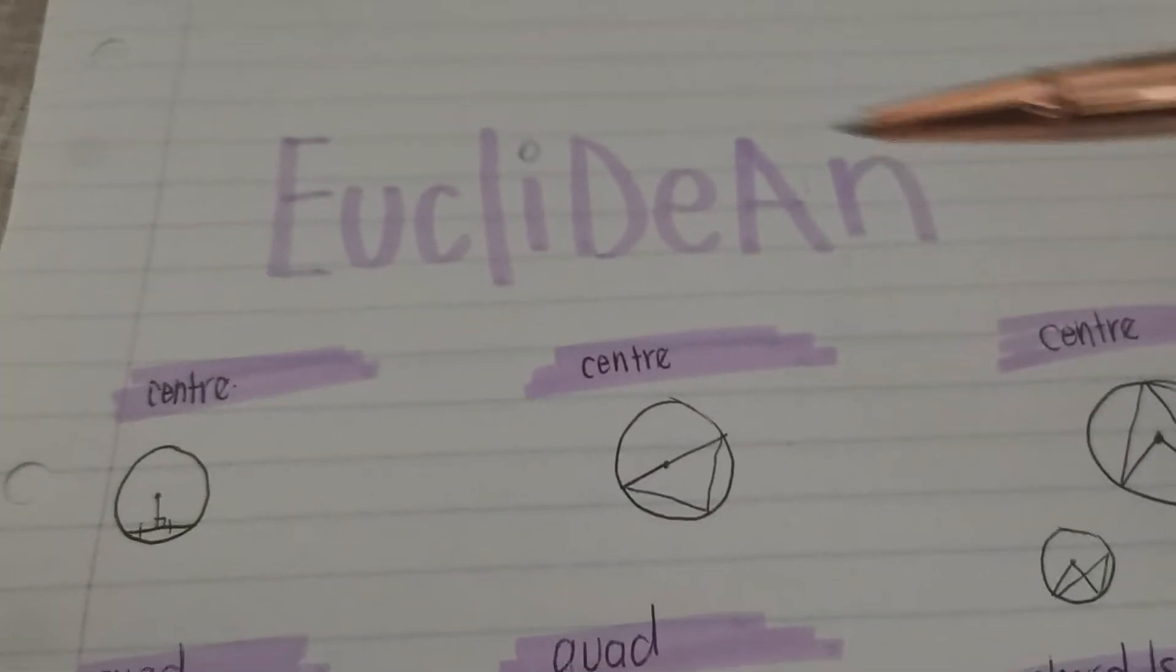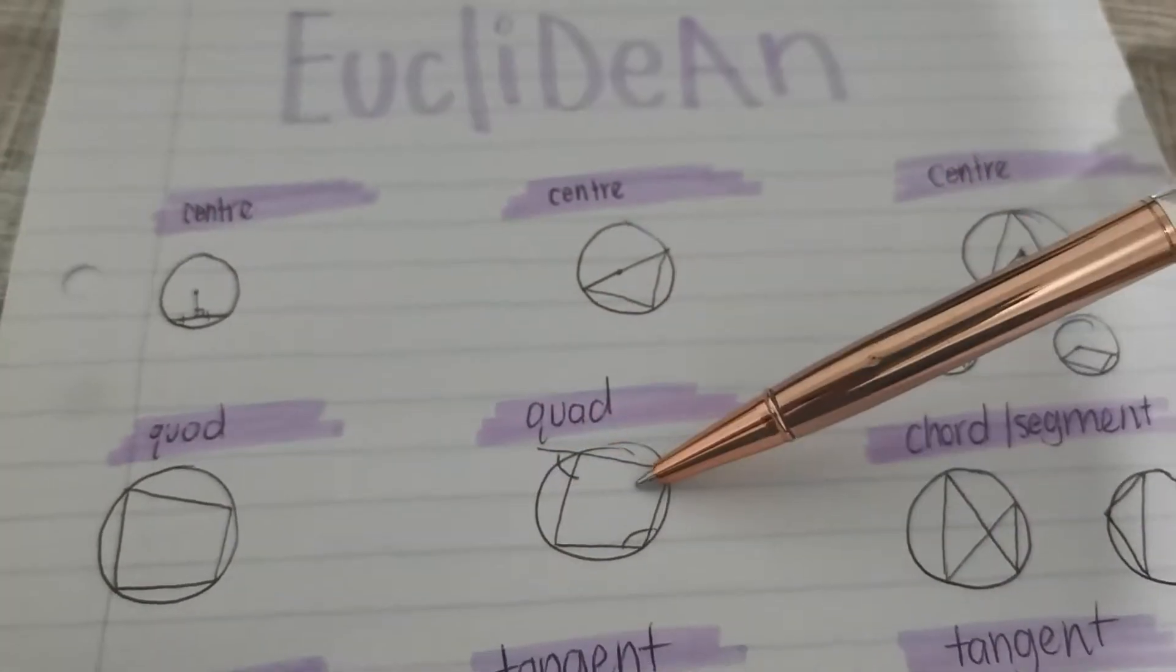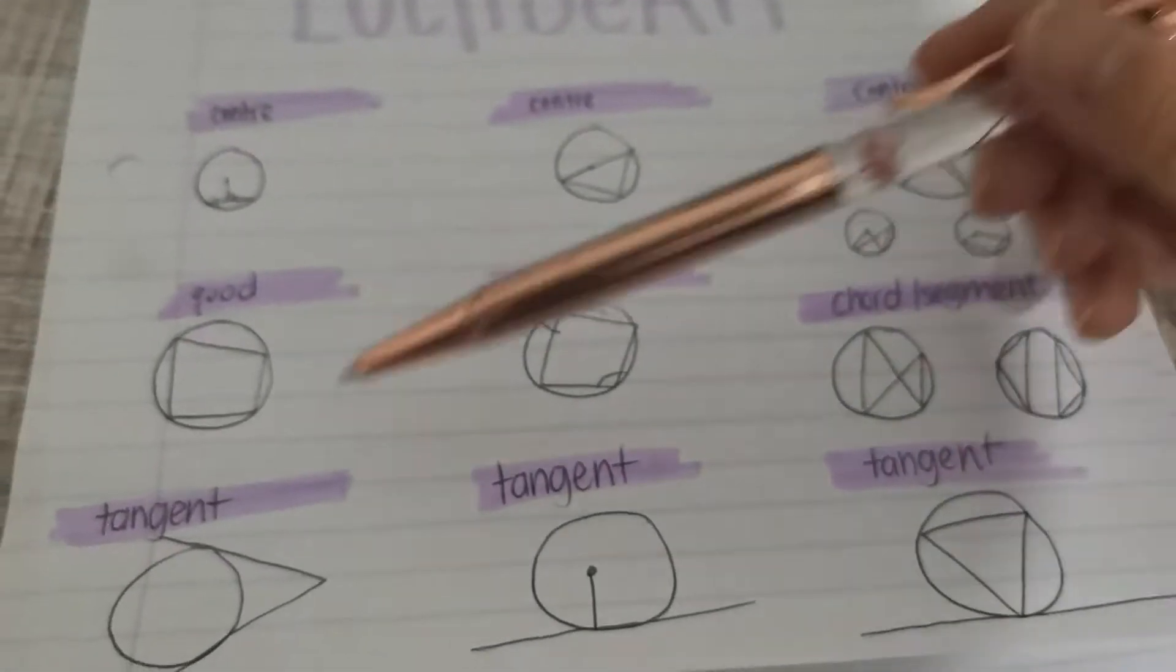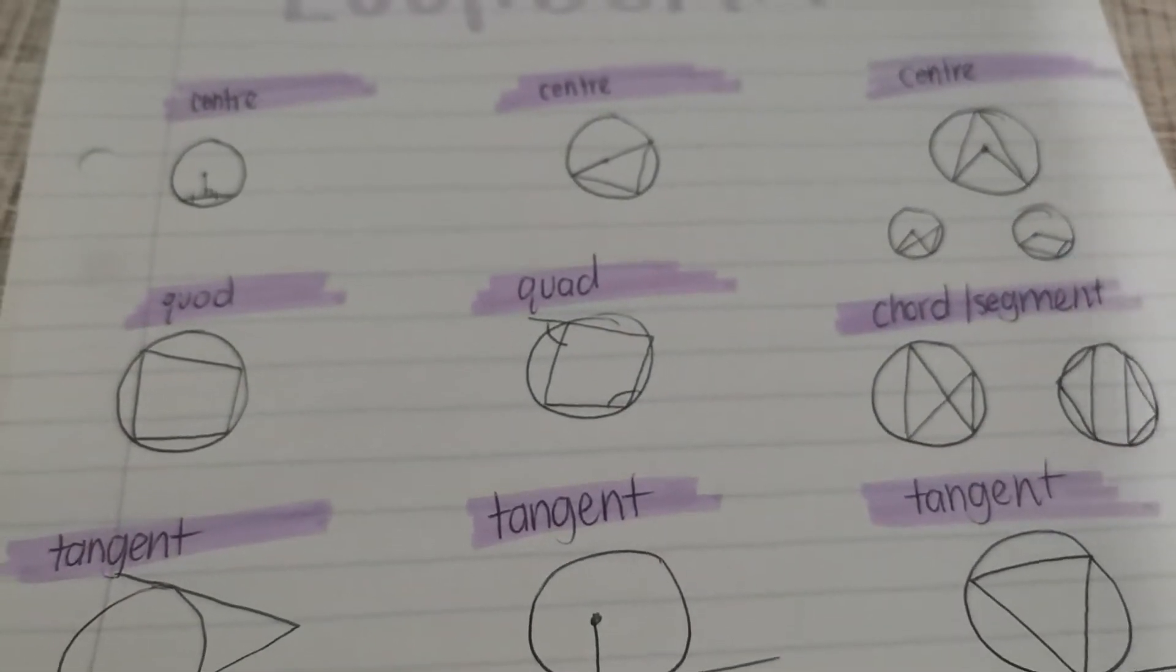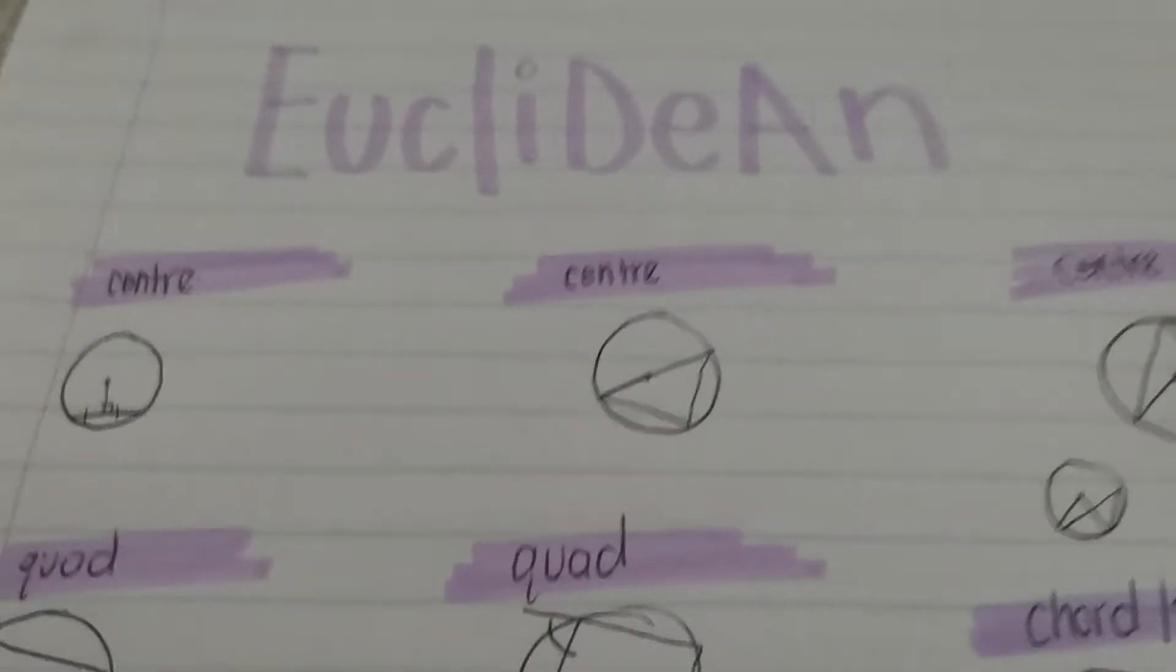If you write all of this information down when you just start your paper, even if you draw a blank, at least you can go back and still try and recall some information. What I want you to do is you're going to divide it into four types. It's the center, the one that has to do with cyclic quads, the one that has to do with chords or segments, and the one that has to do with tangents. You're going to use this strategy when you are answering your Euclidean geometry problems.